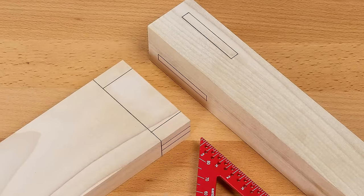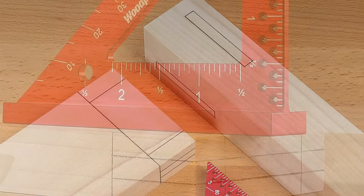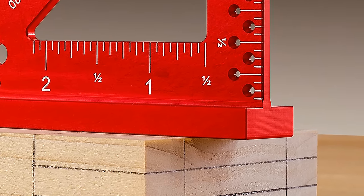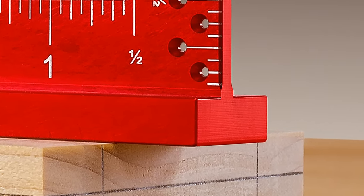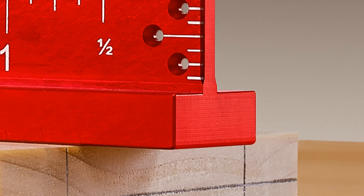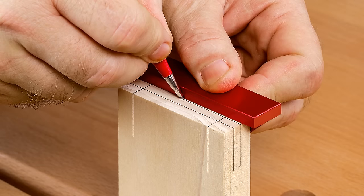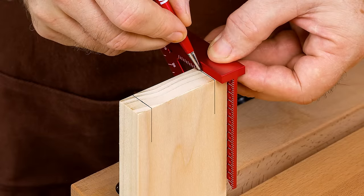No measuring is needed to do mortise and tenon layouts. The Delve Square right triangle is offset in the ¾ inch wide base with ¼ inch on one side and 3 eighths inch on the other. So in commonly used ¾ inch thick stock, tenon cheeks and shoulders are marked with the stroke of a pencil.